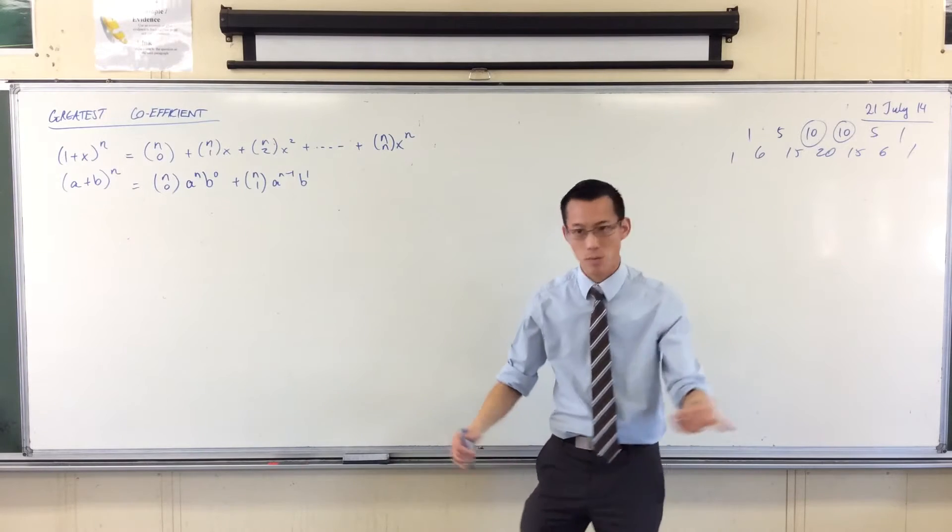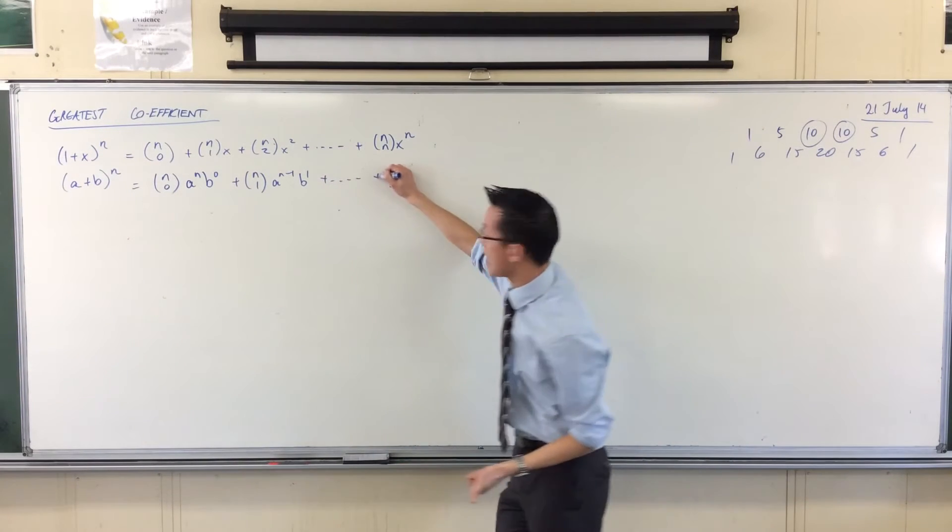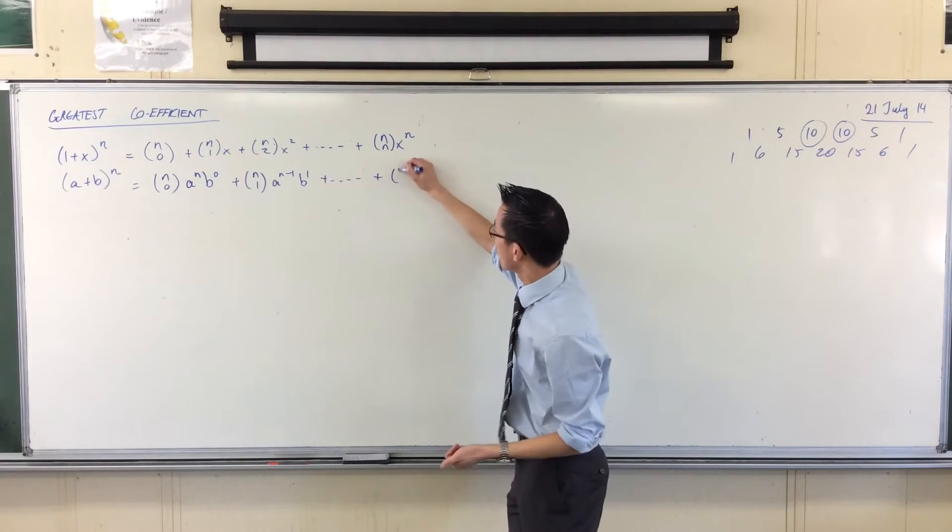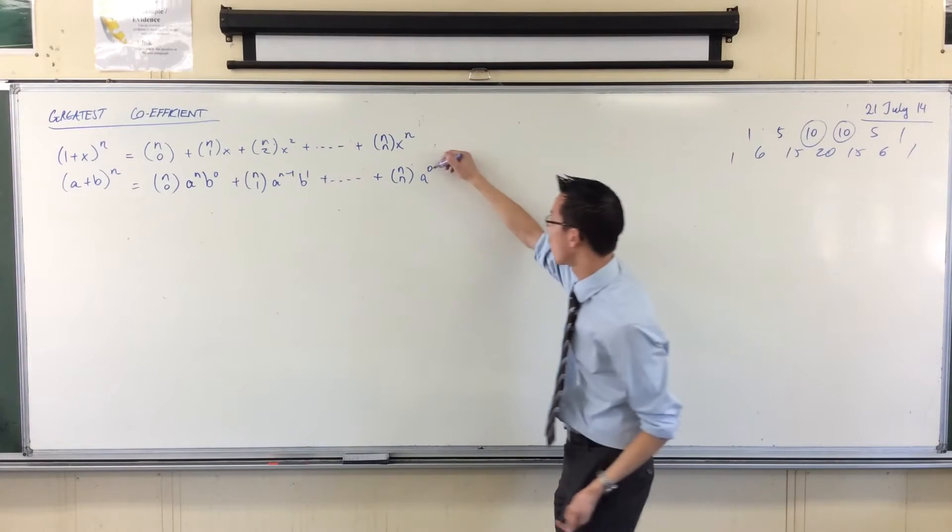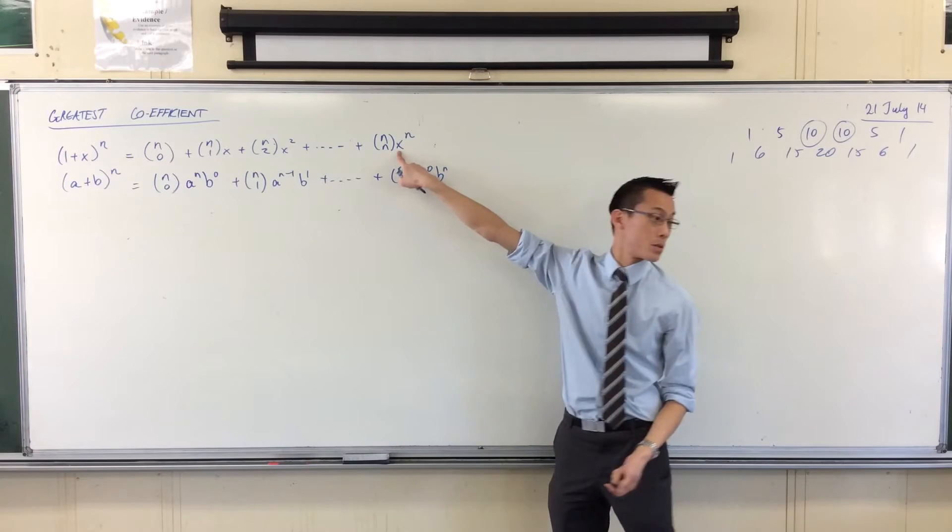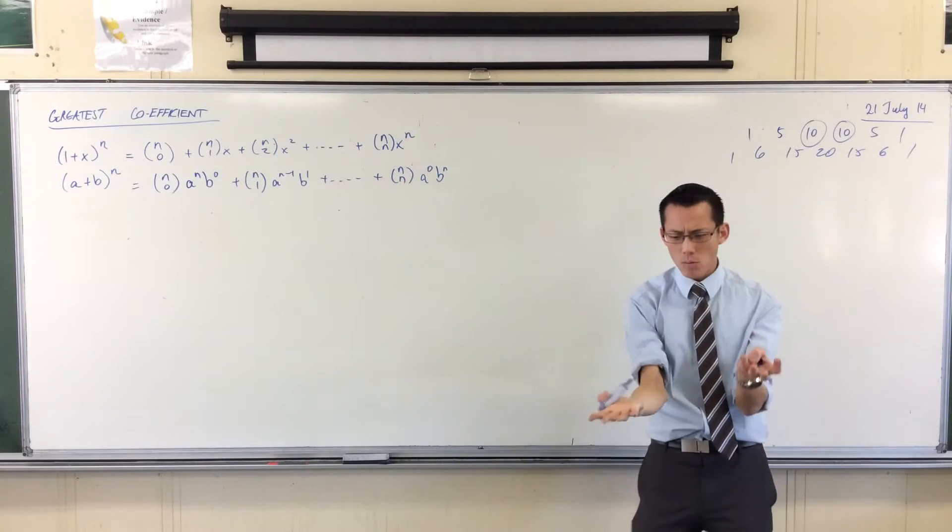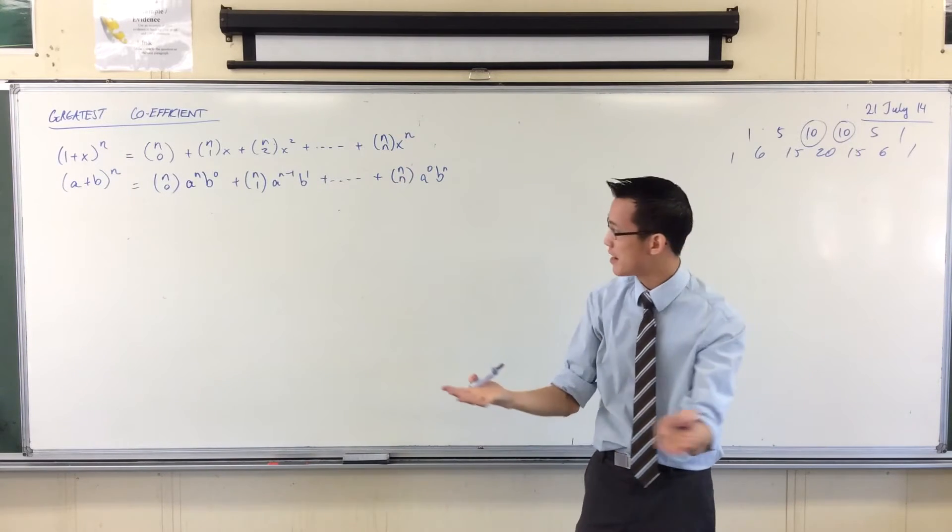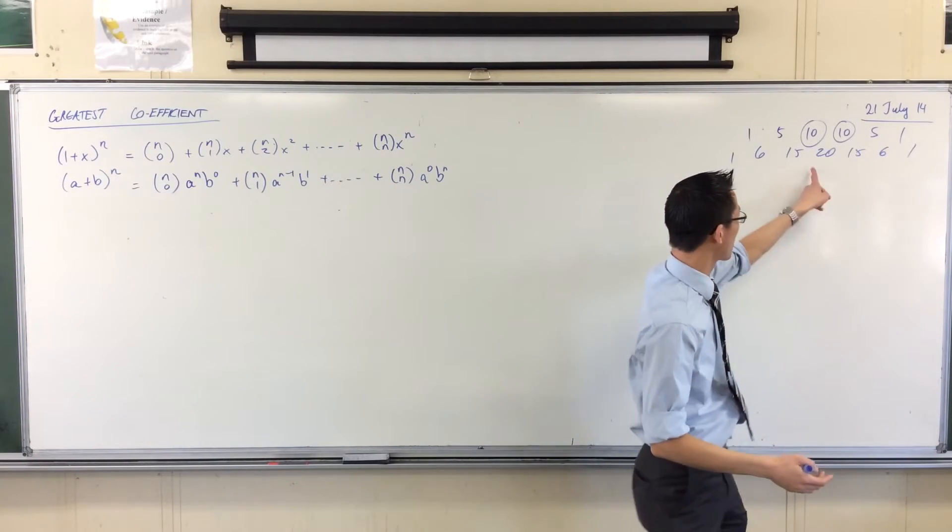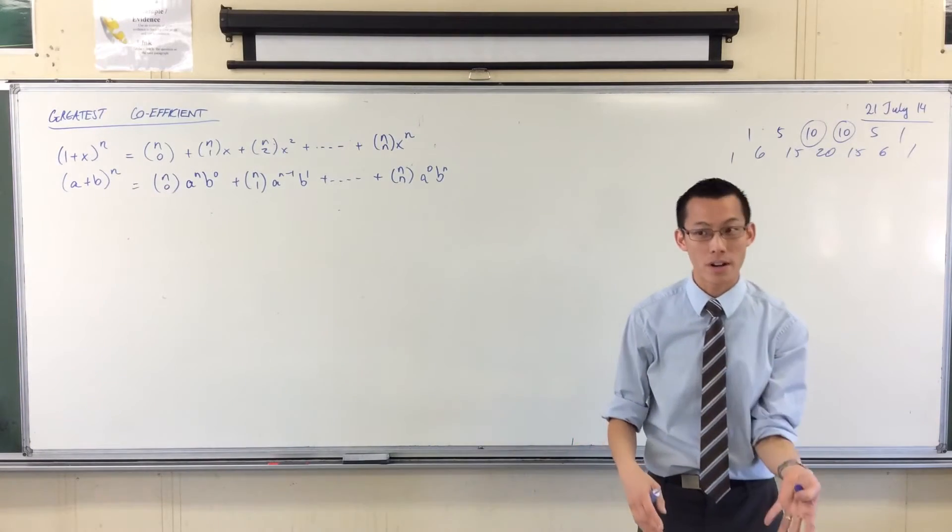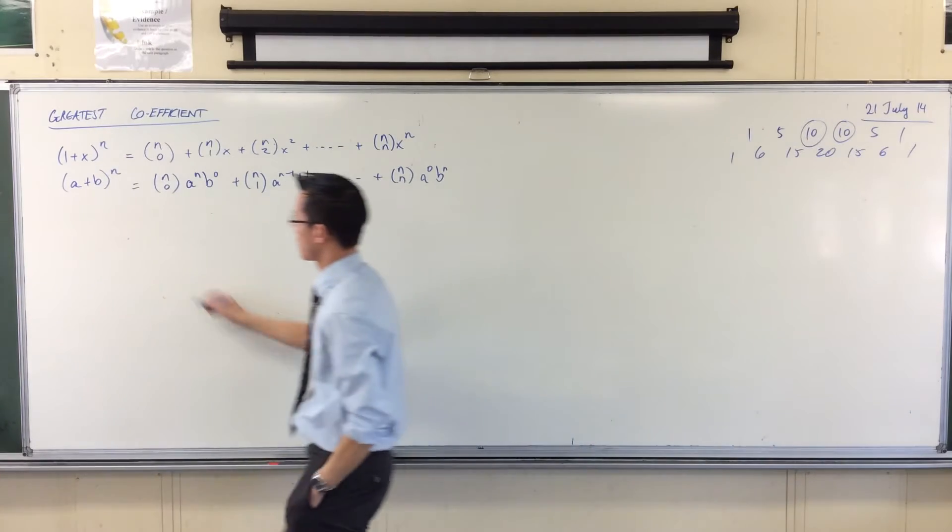One less, one more, one less, one more, until all the way at the end you've got your n choose n, you've got no lots of a left, and then you've got all of your b's. So based on what a and b are, it's going to tilt the top, or tilt the greatest coefficient, one way or another. Let me give you some examples.